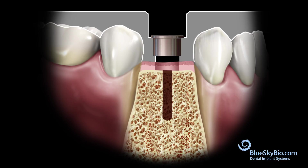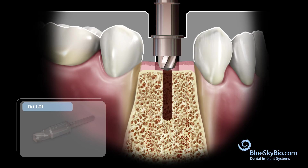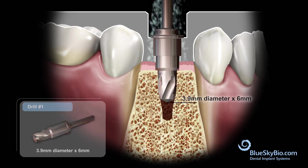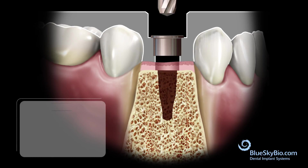Blue Sky Bio drills have direct cut technology, therefore it is not necessary to use every width in sequence. Proceed directly from the 2 millimeter drills to the next-to-last width drill required. In this case it is the 3.9 by 6 millimeter drill. Insert the drill without spinning until it is centered by the master tube. Activate the drill and advance until stopped by the master tube.